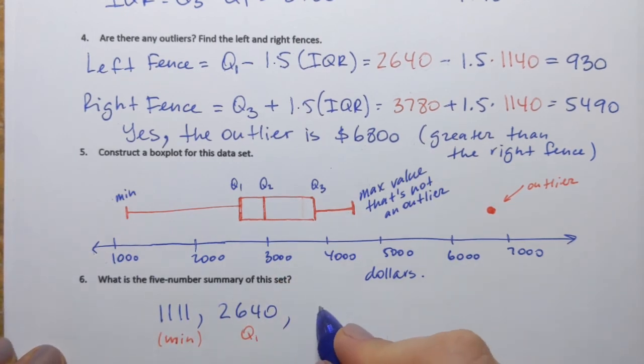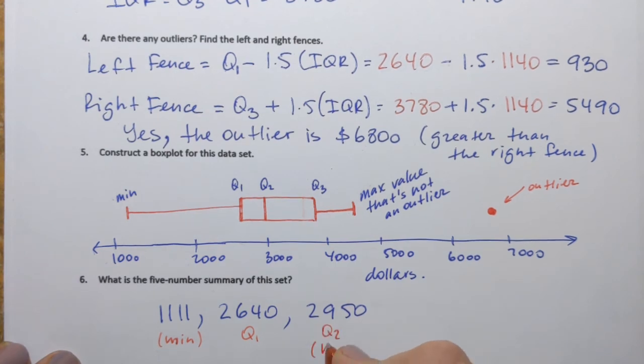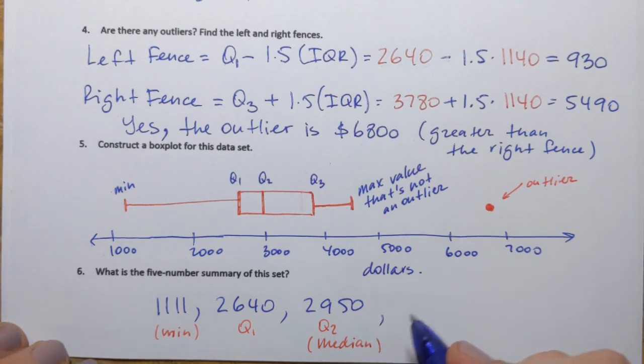Next one is Q2, 2,950. Q2 or median. And then the next one is Q3, 3,780.